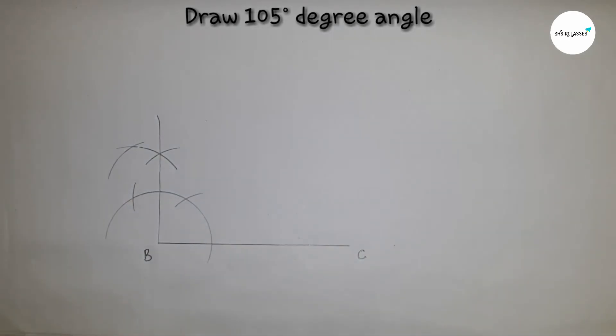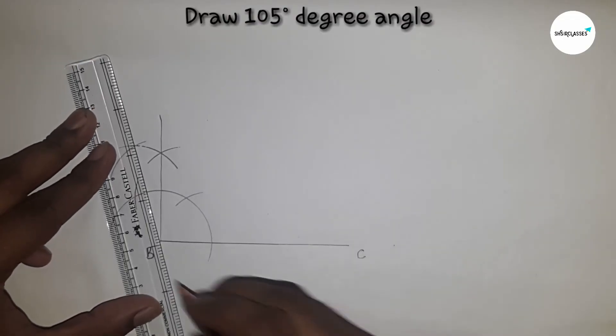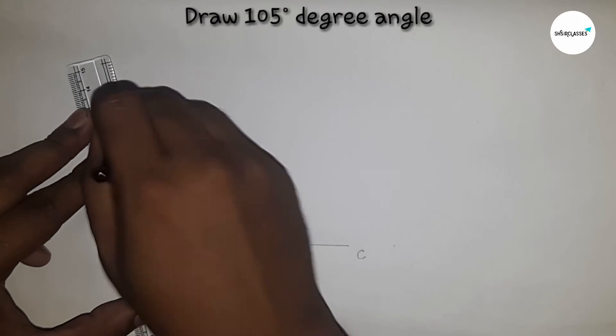So we get an intersecting point here. Now I am going to join the intersecting point and B point by this way, so we get our angle.